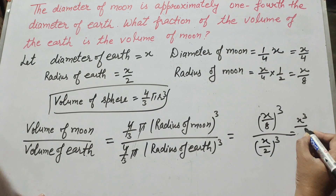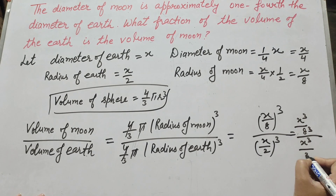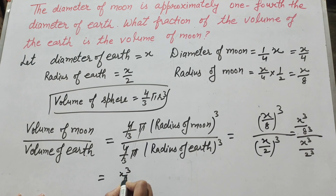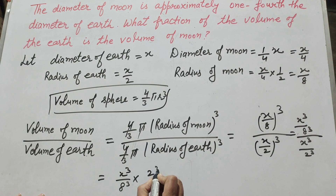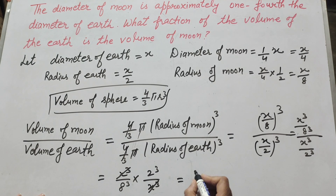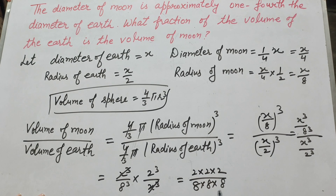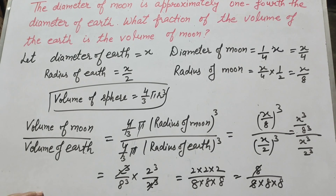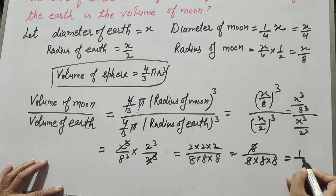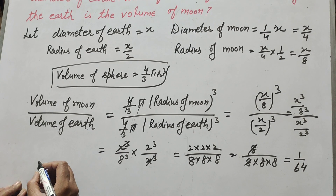We write this as x cubed over 8 cubed, divided by x cubed over 2 cubed. Dividing by a fraction means multiplying by its reciprocal: x cubed over 8 cubed times 2 cubed over x cubed. The x cubed terms cancel. We write 2 cubed as 2×2×2 = 8, and 8 cubed as 8×8×8. So we get 8 over 8×8×8. One factor of 8 cancels, leaving 1 over 64.